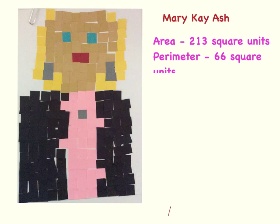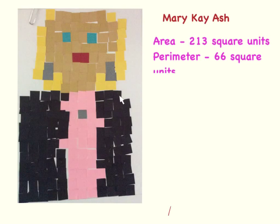Perimeter is the outside of a shape. I had to add up all the outside squares to find my perimeter of 66 square units.